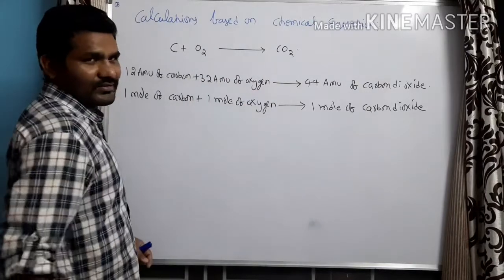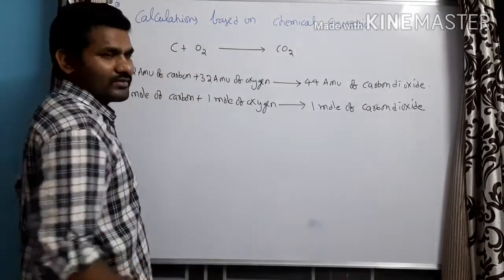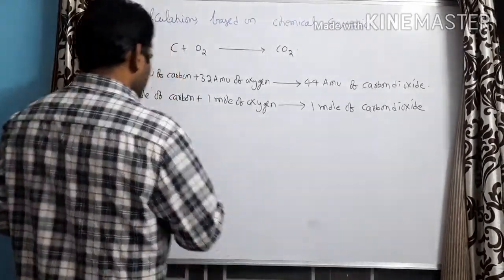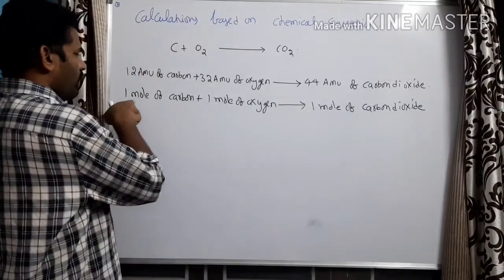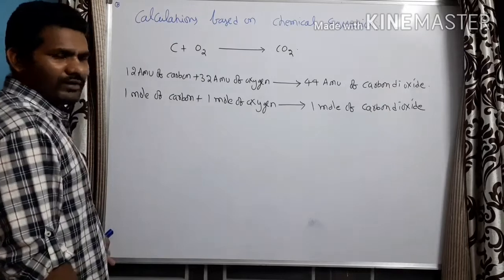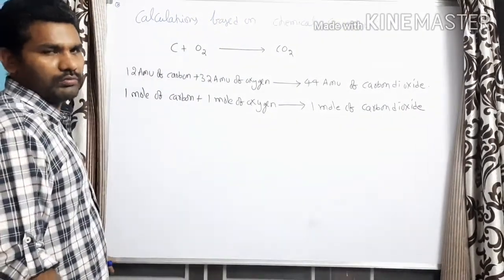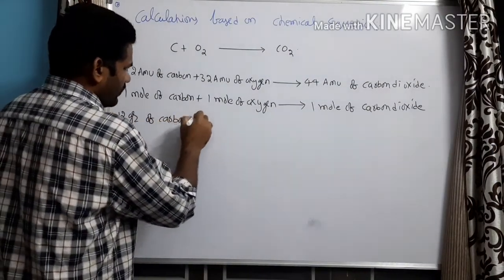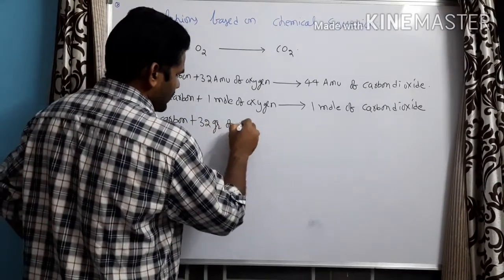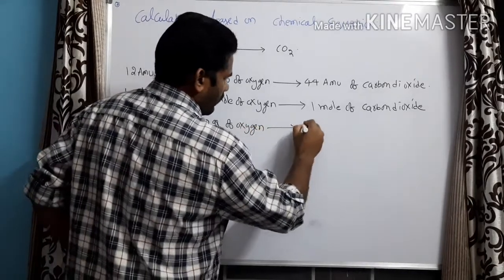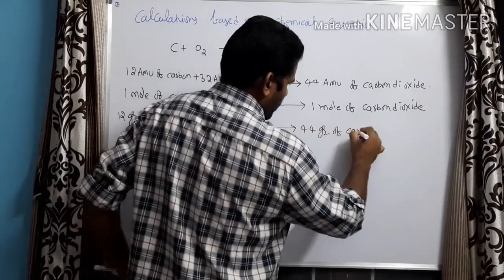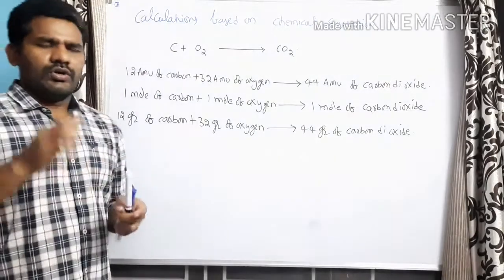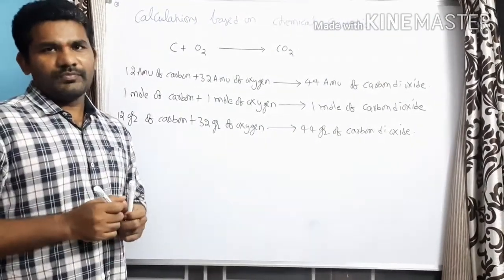Some may have a doubt: if there is a coefficient in the equation, what happens? I will take another example to explain that. Also, one mole is always equal to the atomic weight expressed in grams, which is called a gram mole. So I can rewrite the equation as: 12 grams of carbon reacts with 32 grams of oxygen to form 44 grams of carbon dioxide.